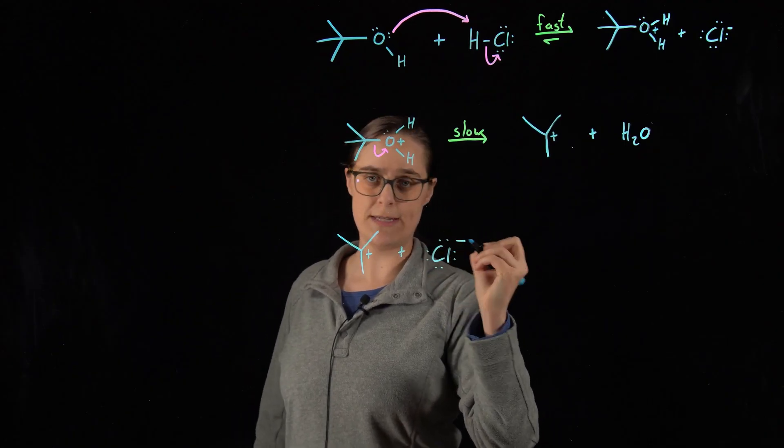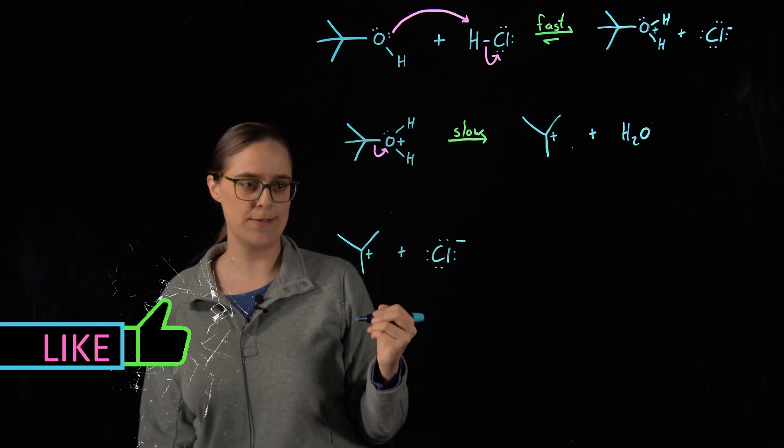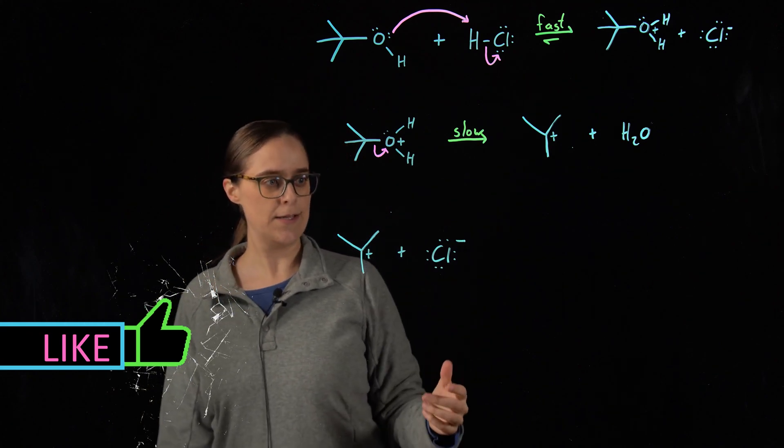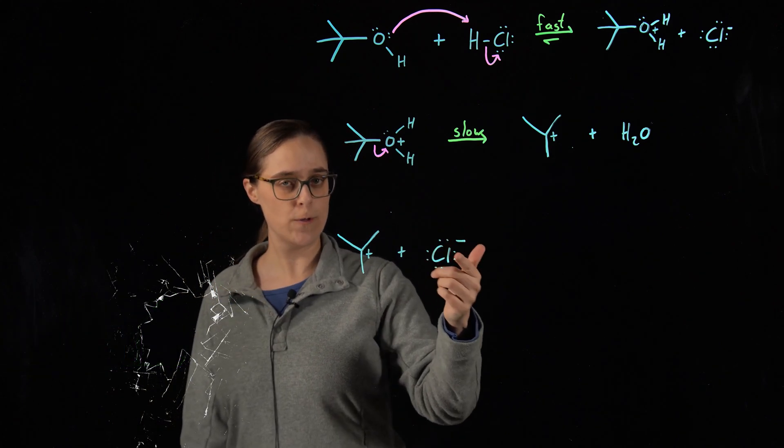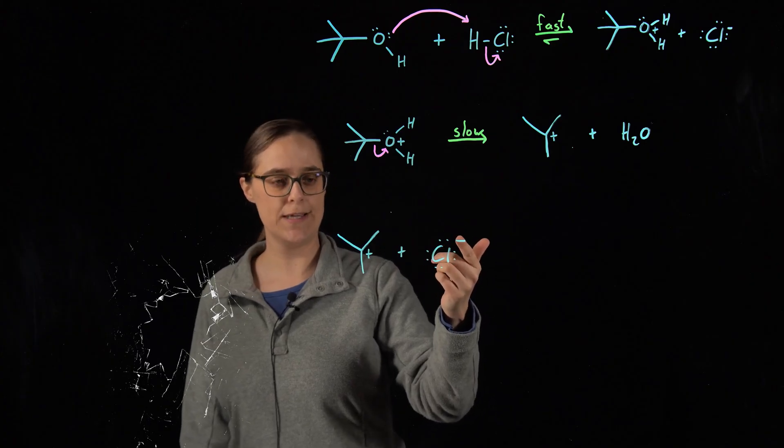We haven't seen it since step one, but we never got rid of it. So it is still there. And here we have four lone pairs of electrons, a negative charge.